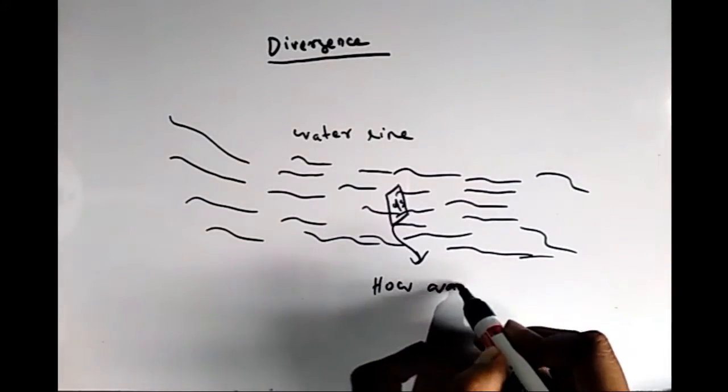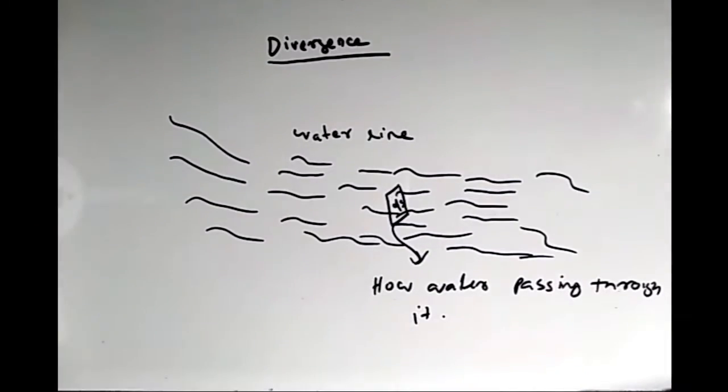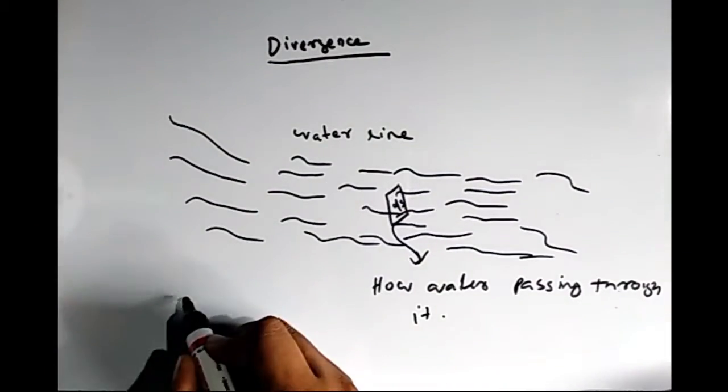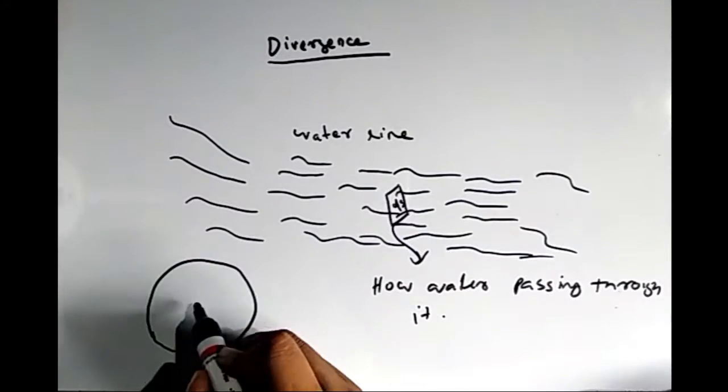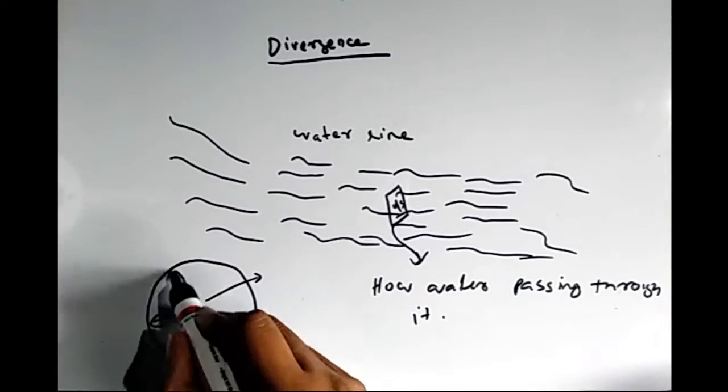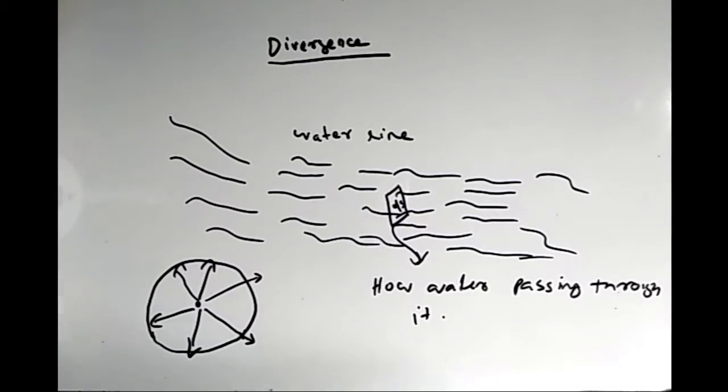Let's say we are trying to calculate how many vector lines are passing through a surface or how much is entering or leaving a unit volume. Now, how can we approach this type of problem?